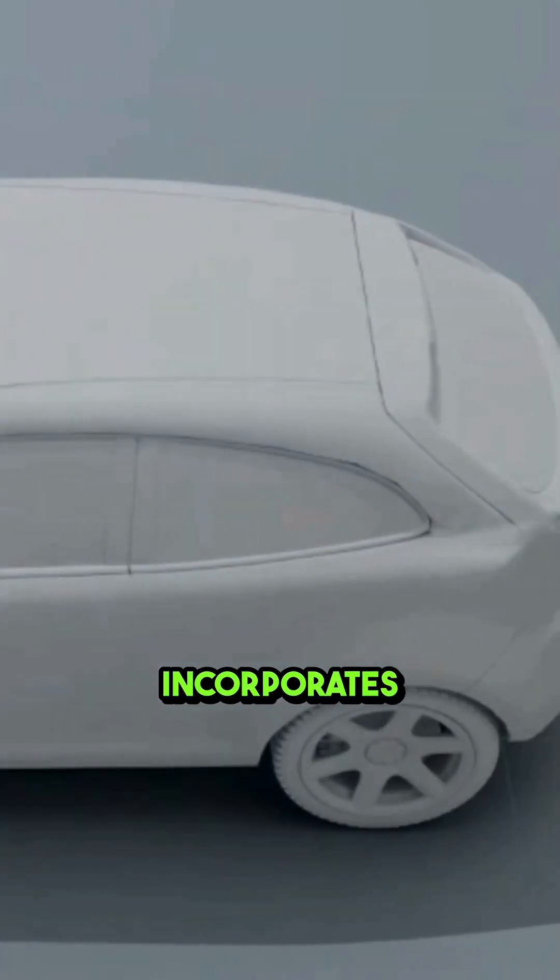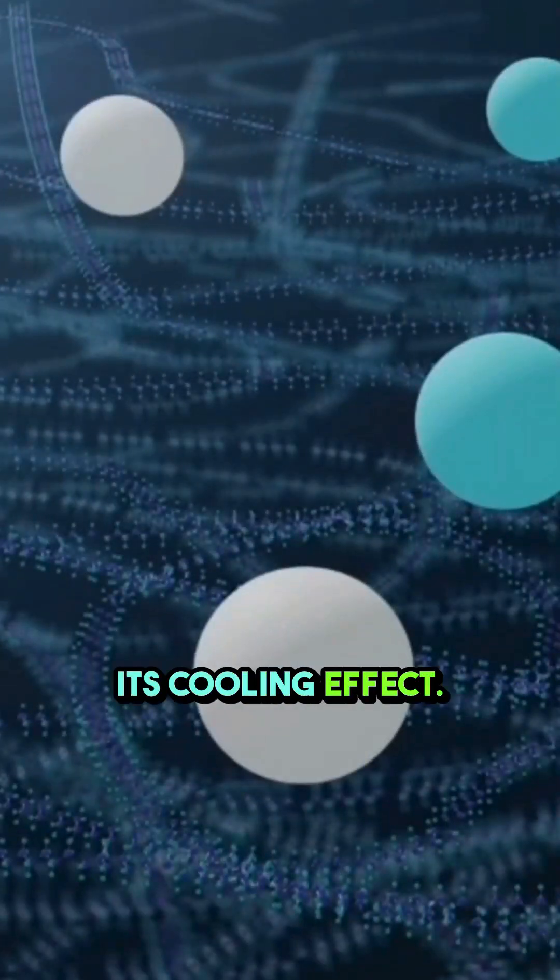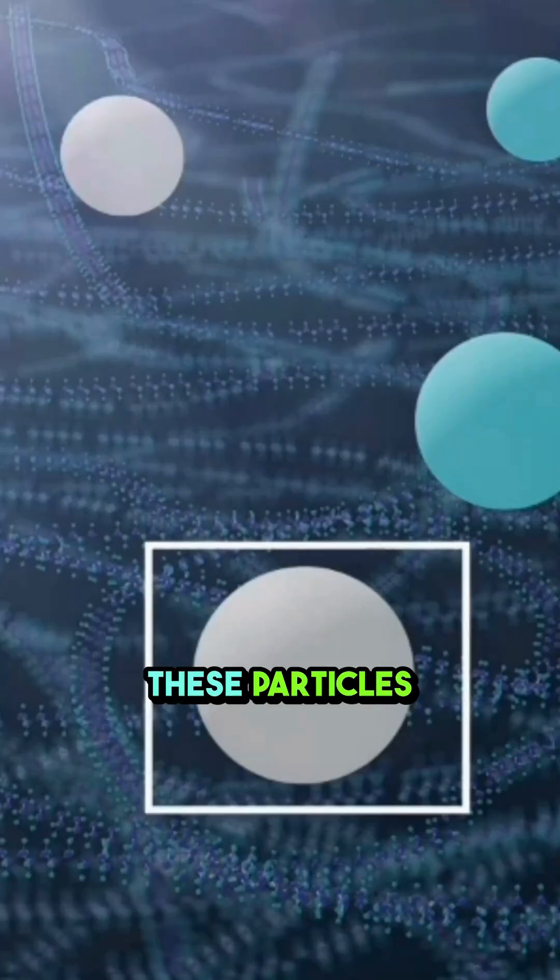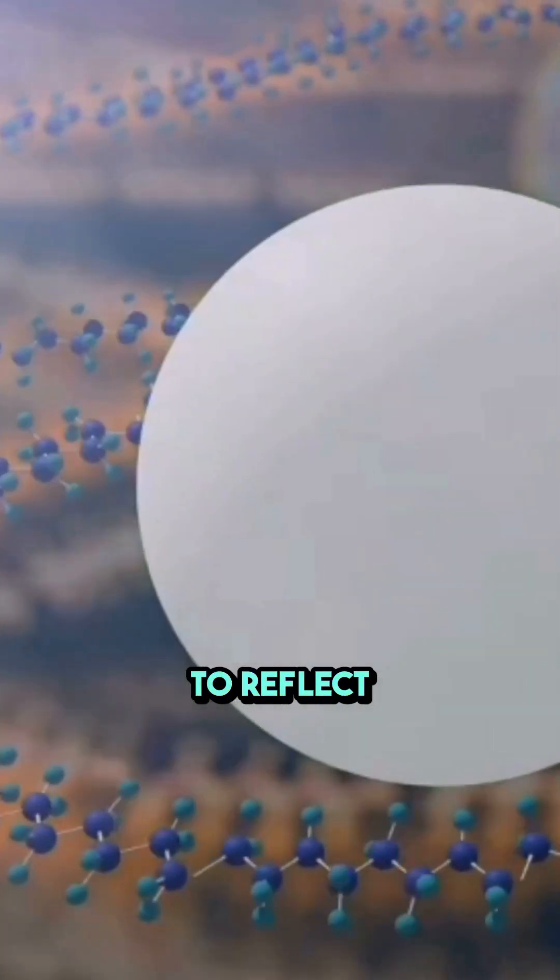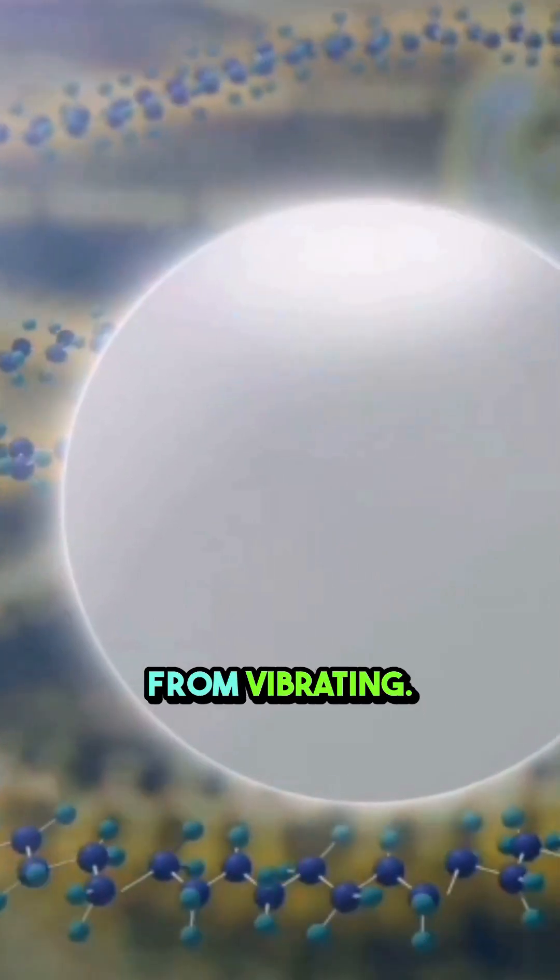Nissan's Cool Paint incorporates two types of microstructure particles to achieve its cooling effect. First, NIR Reflecting Particles. These particles are designed to reflect NIR rays from sunlight, thus preventing the paint molecules from vibrating.